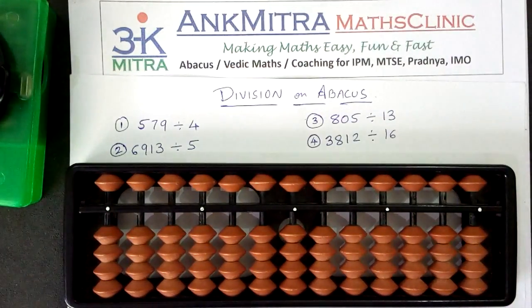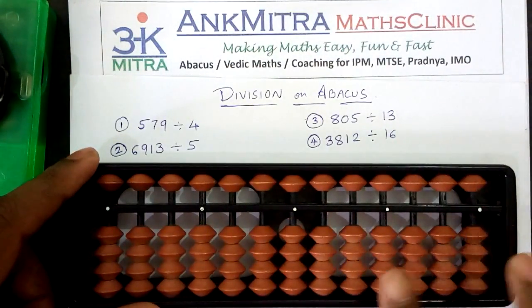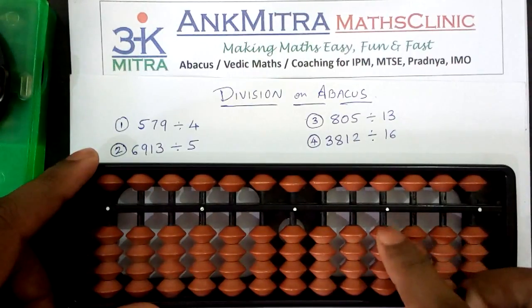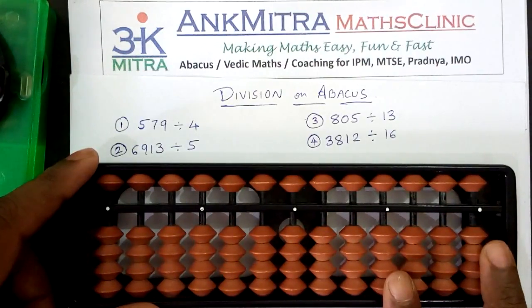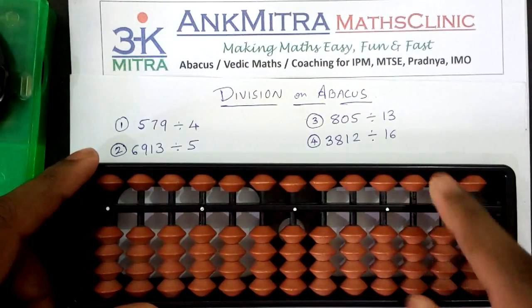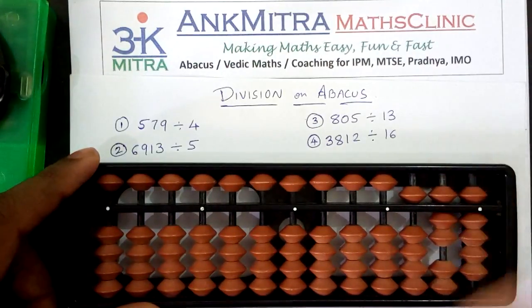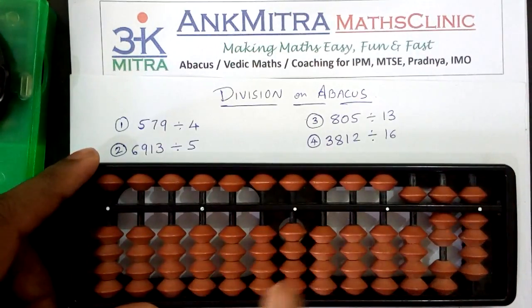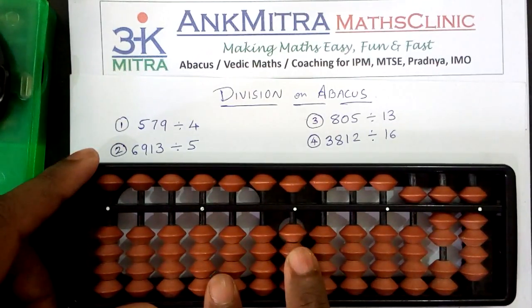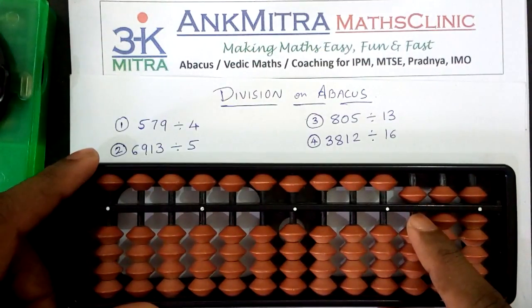The question set is used to represent the first given number. This is our question set — units, tens, hundreds, and thousands place for the question set. I'll take the number 579, which is a three digit number, so I'll start from the hundreds place: 5, 7, 9. Our answer set will be these rods — units, tens, hundreds, thousands place for the answer set.